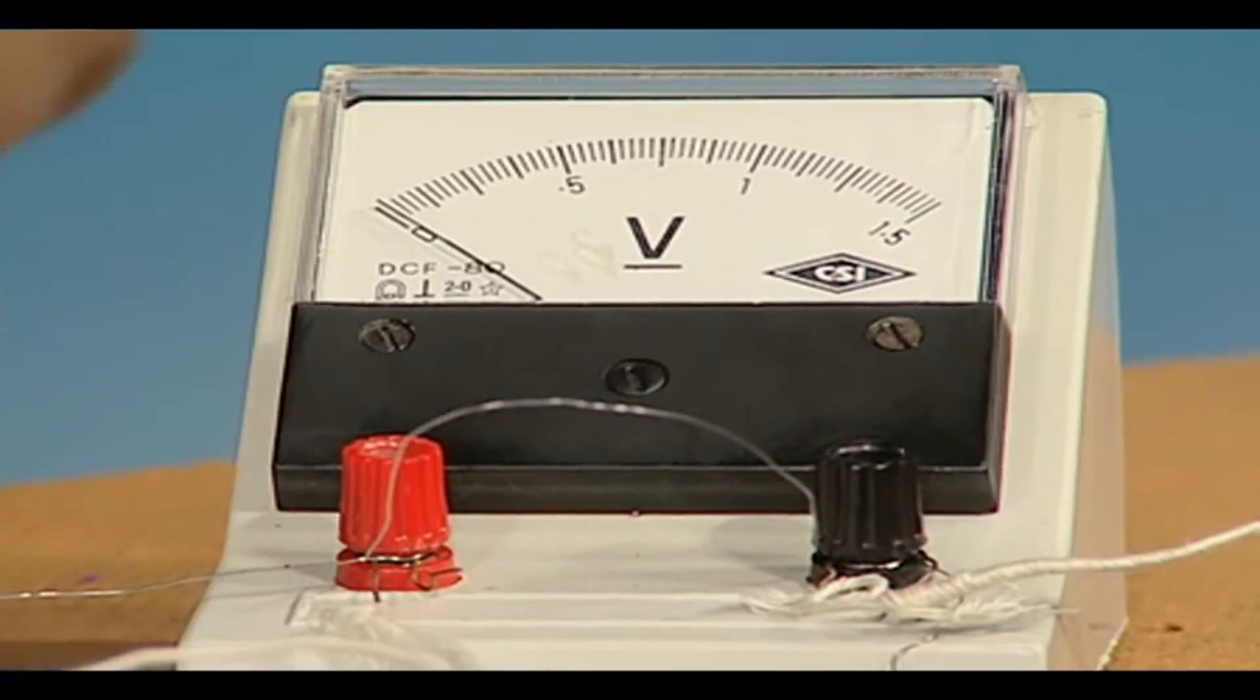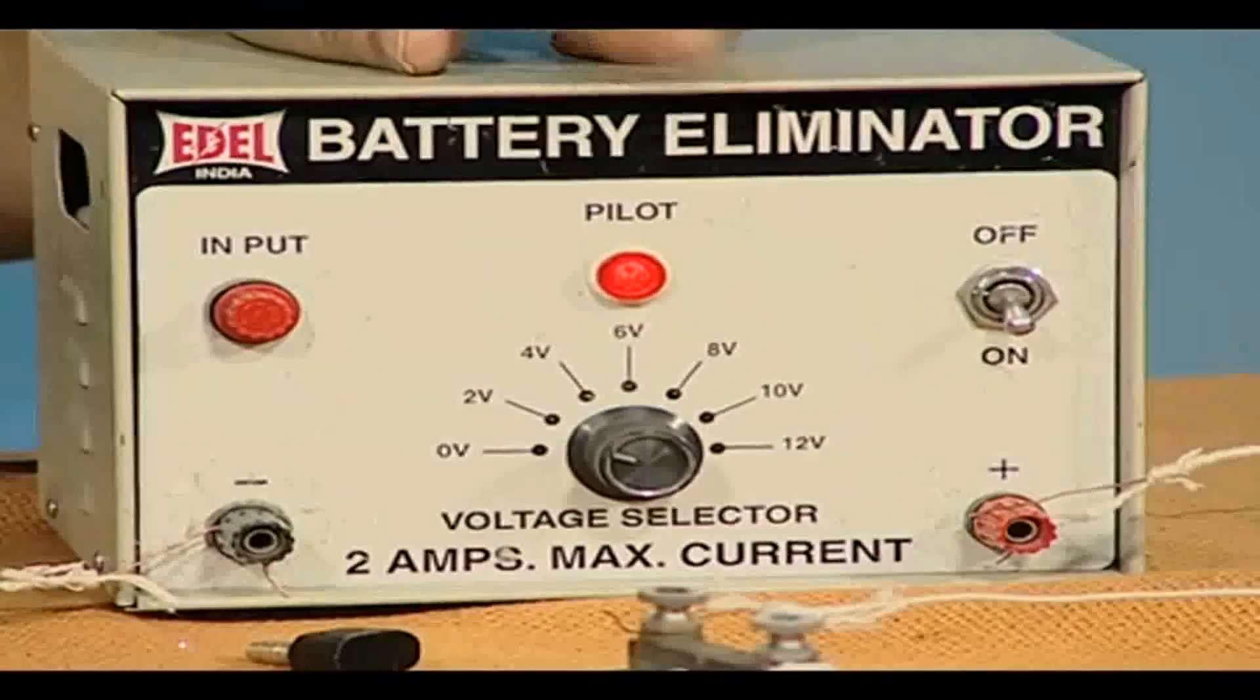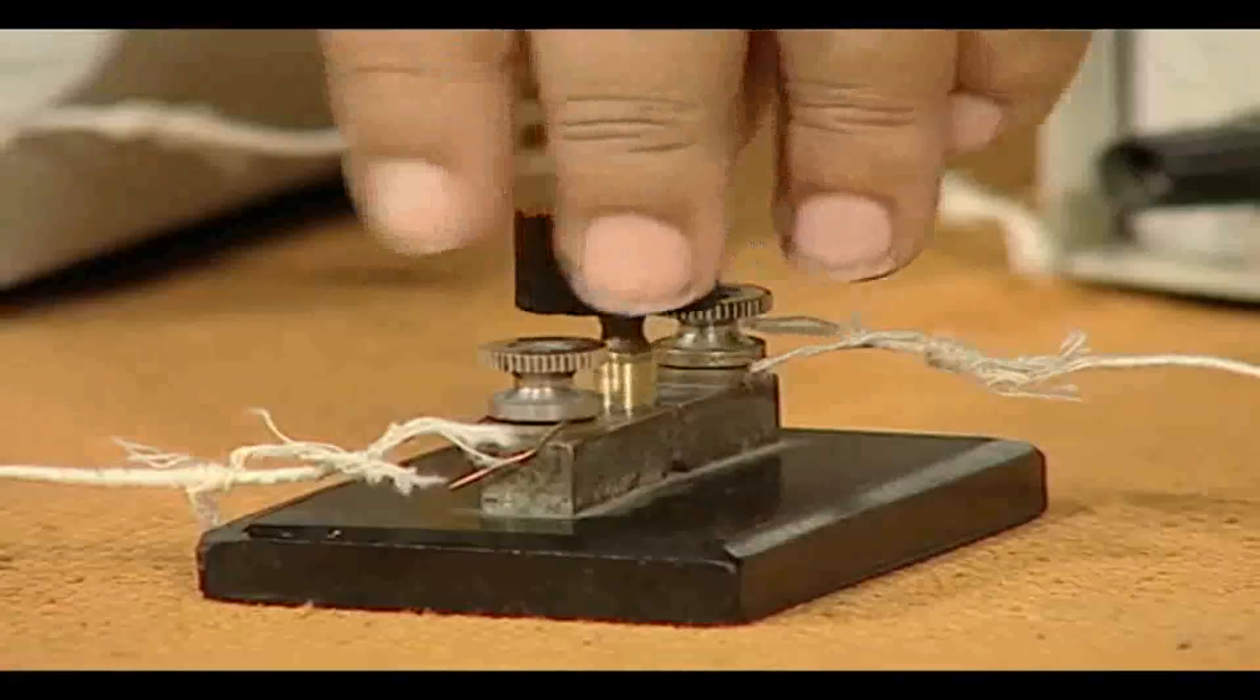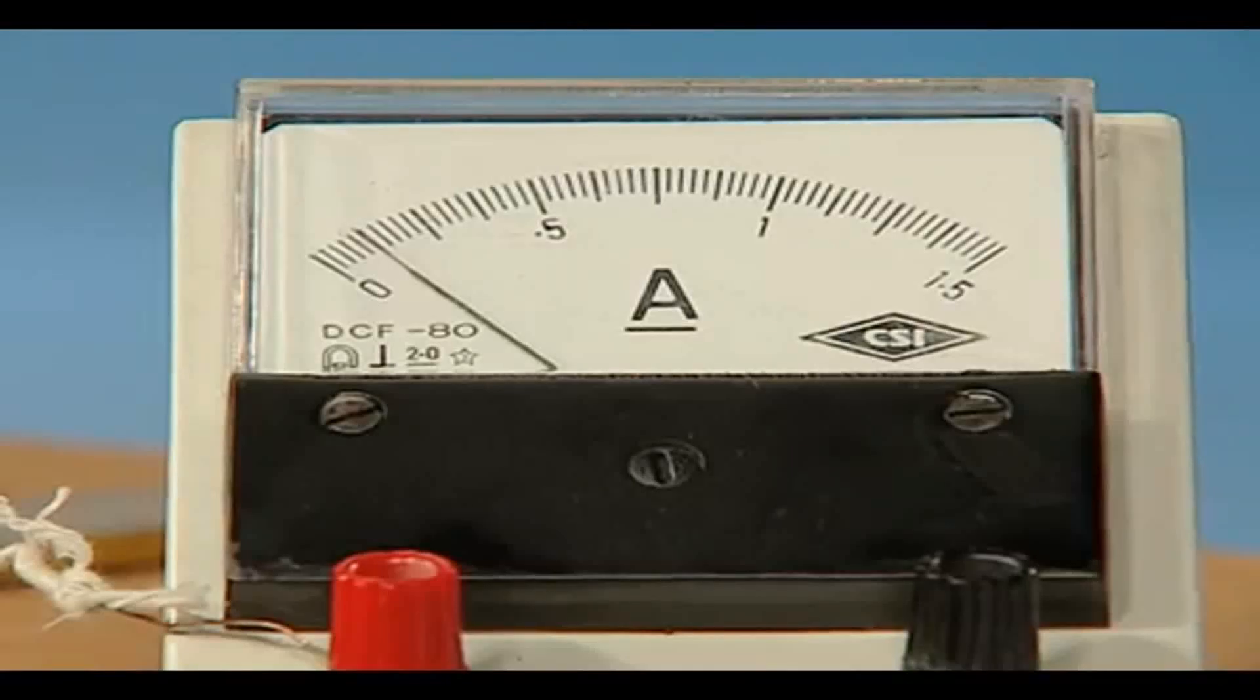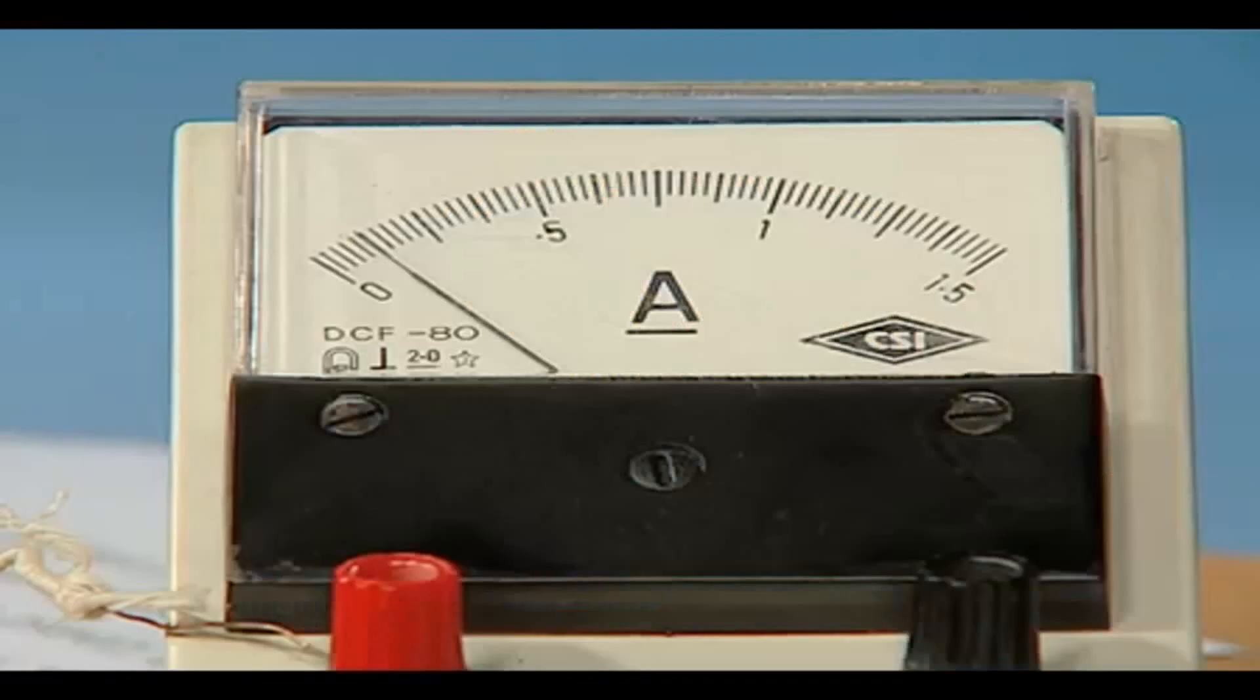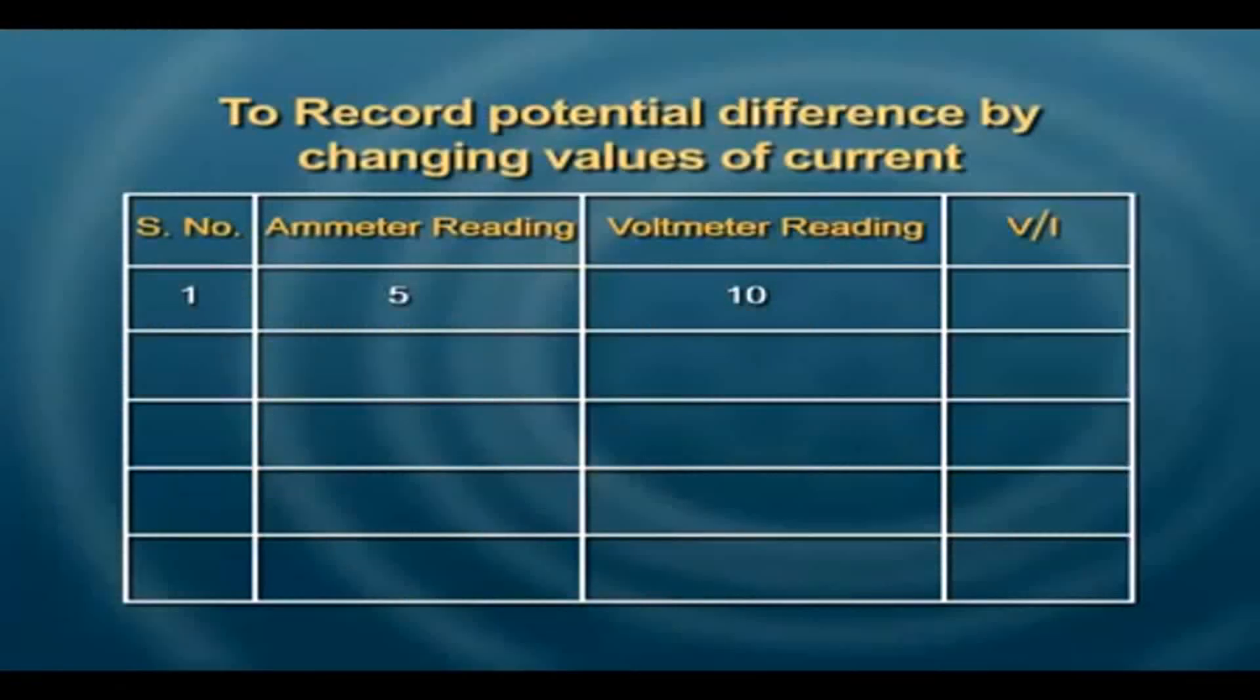Let us now start taking our readings. I switch on the eliminator, put the key in, and let us observe the reading in the ammeter. The ammeter reading is 5 divisions. We can take and record the reading in divisions and later multiply it by the least count to get the real value in amperes. The corresponding voltmeter reading as we can see is 10 divisions.